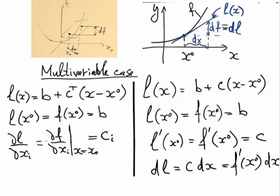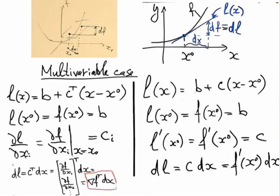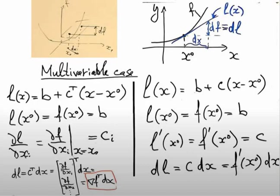For the linear function to be tangent to my original function, its partial derivative in every variable should coincide with the slope of the original function in that variable. The slope of the partial derivative of this linear function is just cᵢ — since we have a sum of cᵢ·xᵢ, cᵢ should equal ∂f/∂xᵢ. Therefore, the differential, the increment of the linear function, is c transposed multiplied by dx. Since c is the vector of partial derivatives — the gradient — the differential equals the gradient transposed multiplied by dx. This is the basis of all our developments.